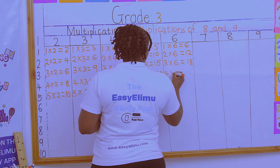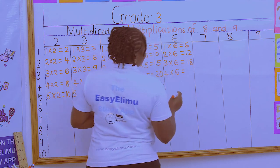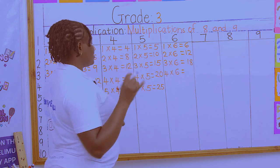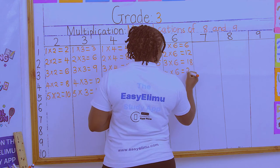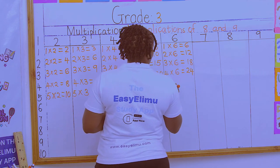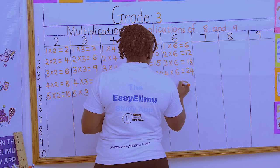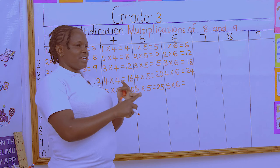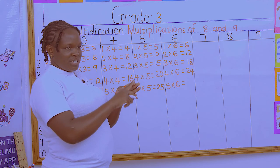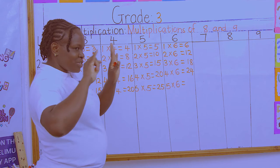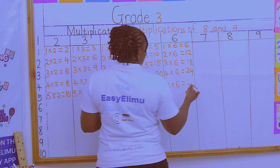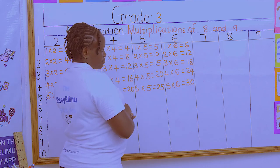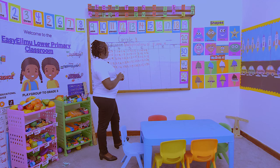Continuing the 6 table: 4 × 6 = 24. 5 × 6 — using the finger method: 5, 10, 15, 20, 25, 30. So 5 × 6 = 30. It's easy!